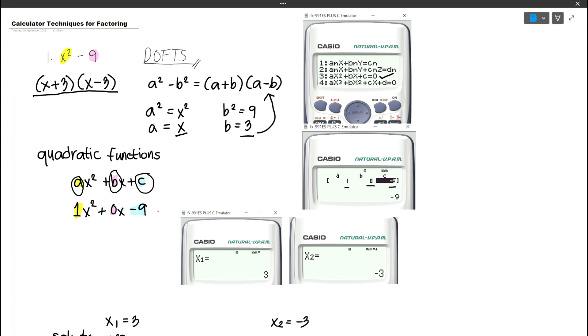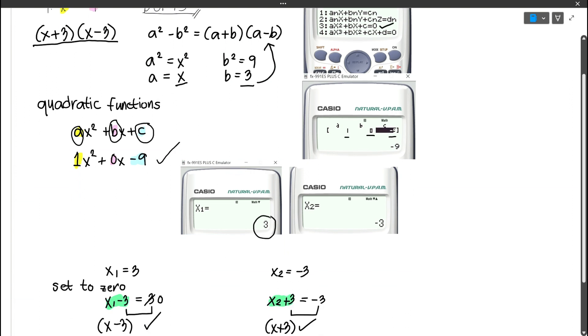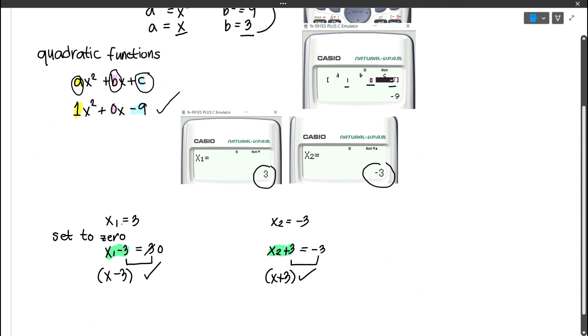Using the x values provided by the calculator, which are 3 and negative 3, we can use them and set the equation to 0. So, for x1 equals 3, we move 3 to the left side and then it will become x minus 3 equals 0.